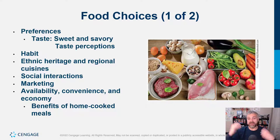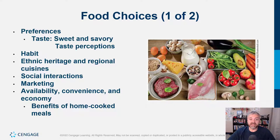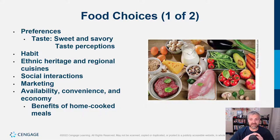Marketing is another big factor. Companies are spending millions and billions of dollars to try to convince you to eat in a certain way. Every time you watch TV, read something, or go on social media, you're being influenced to make purchasing decisions, and that goes with your food as well. Availability, convenience, and economy also matter a lot. I know how busy my students are — sometimes you just have to choose the healthiest food you can make quickly. And cost is a huge factor, especially now when food prices are skyrocketing. We'll talk throughout the semester about ways to eat healthy on a budget.